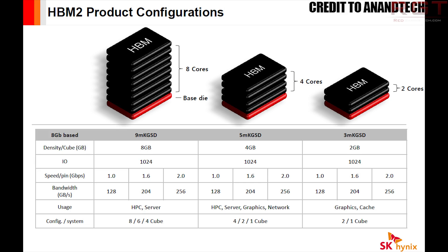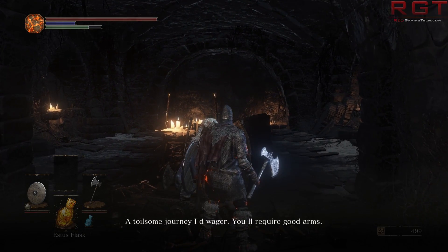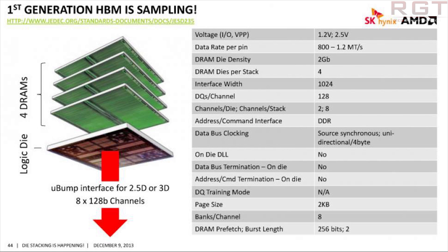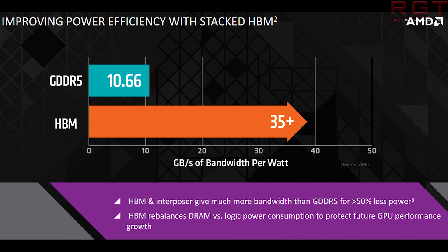GDDR5X is very similar to GDDR5 but sports much higher speeds. High bandwidth memory is vertically stacked memory which runs at much lower speeds compared to GDDR5 or GDDR5X, but has a much wider bus — for example, 1024-bit for just one stack of HBM1. This allows lower power consumption and higher bandwidth compared to more traditional memory.